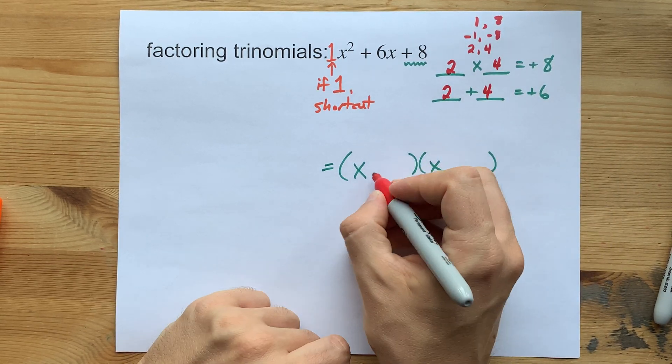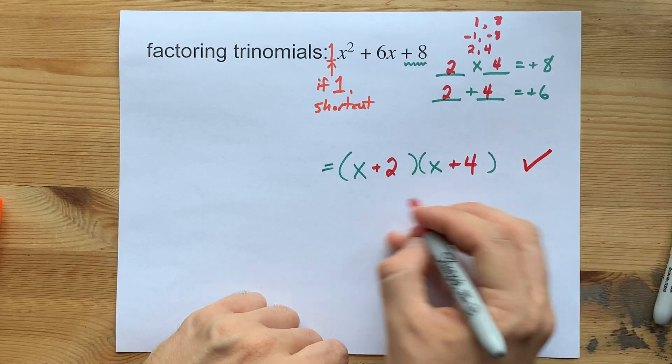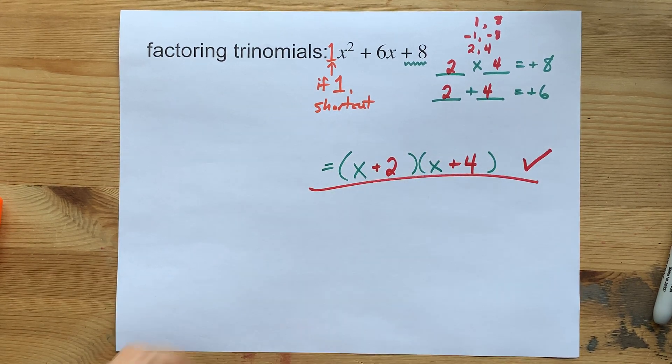As promised, positive 2, positive 4. This is your factored equation. It's x plus 2 times x plus 4.